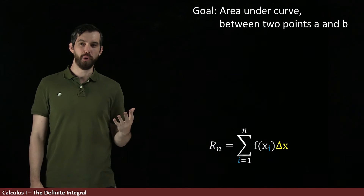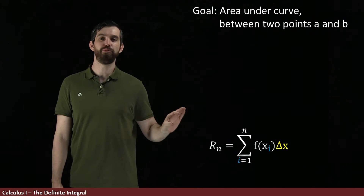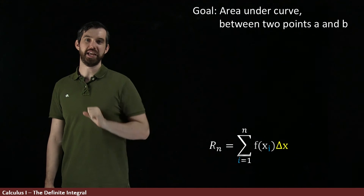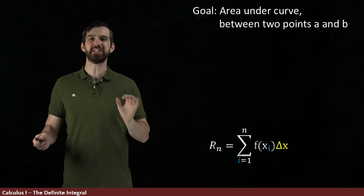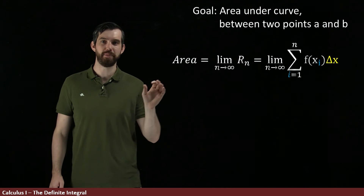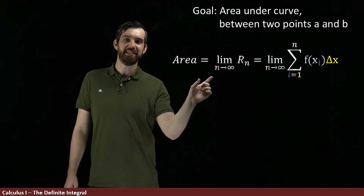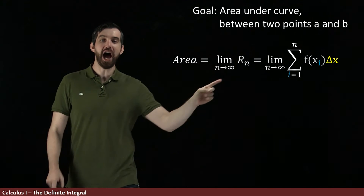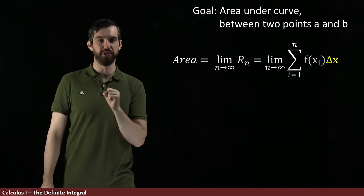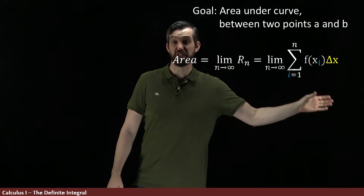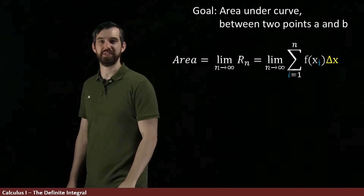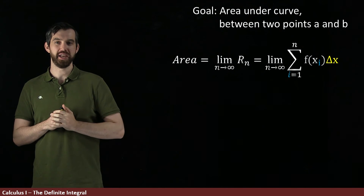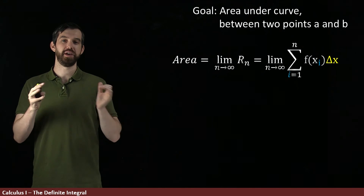Our goal is to take this rectangle approximation formula and take the limit as n goes to infinity. My final step is setting the area equal to this limit as n goes to infinity of the rectangle approximations — in other words, the limit as n goes to infinity of the sum of rectangles with height f(xi) and width Δx.